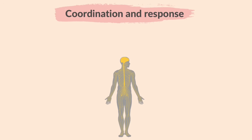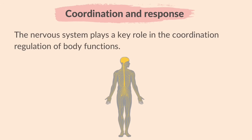Organisms require proper coordination between various organs and systems to work together to keep them alive. They have to be able to sense changes in their environment and respond to them appropriately. The nervous system plays a key role in the coordination and regulation of body functions. It is responsible for receiving and processing information from the environment and from within the body, and then generating appropriate responses to maintain homeostasis — the stable internal environment of the body.